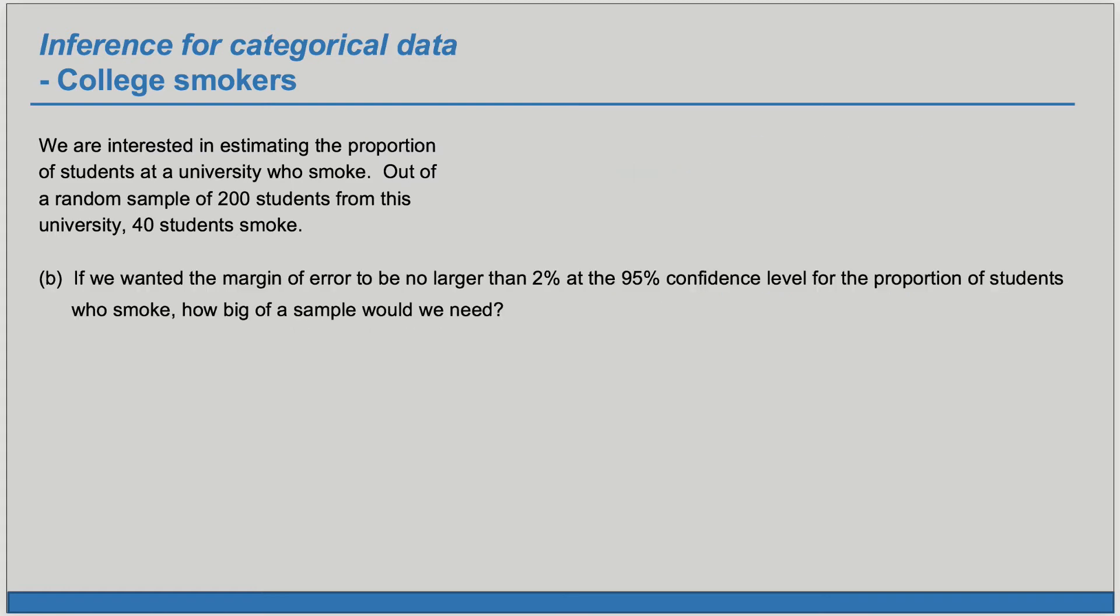Now we're ready for part b. If we want the margin of error to be no larger than two percent at the 95 percent confidence level for the proportion of students who smoke, how big of a sample would we need? What's the smallest sample size that would satisfy these conditions?